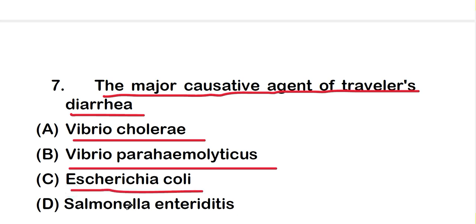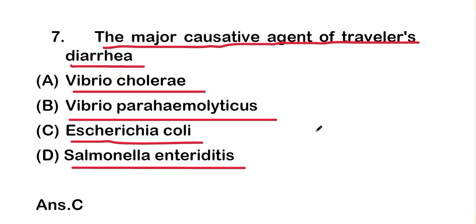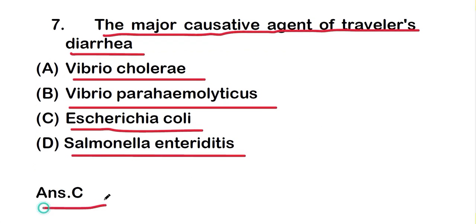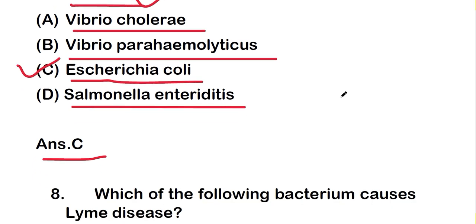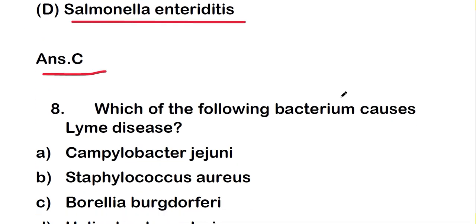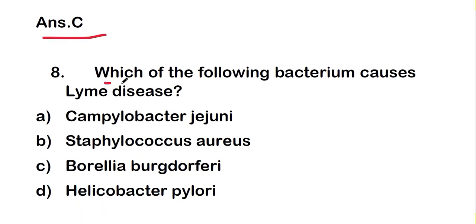The major causative agent of traveler's diarrhea: the right answer is option C — Escherichia coli — which is known as the causative agent of traveler's diarrhea.